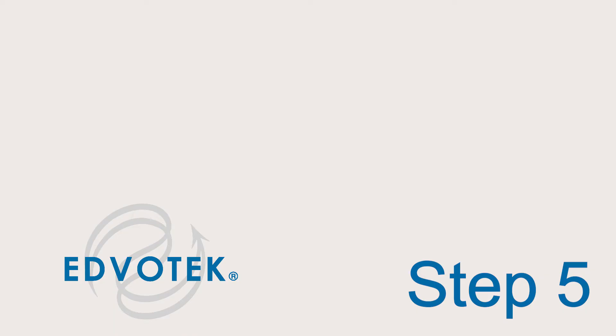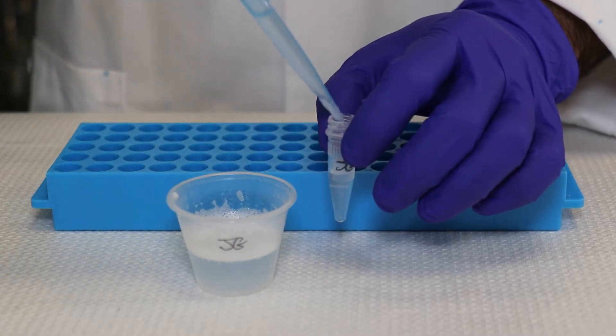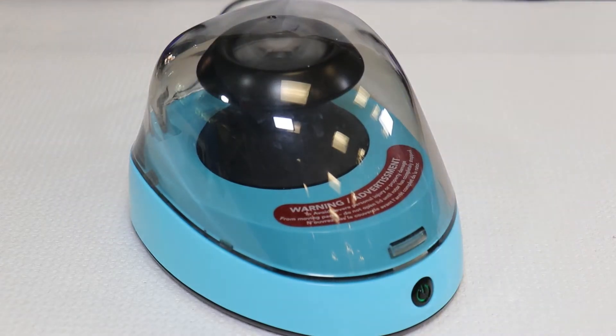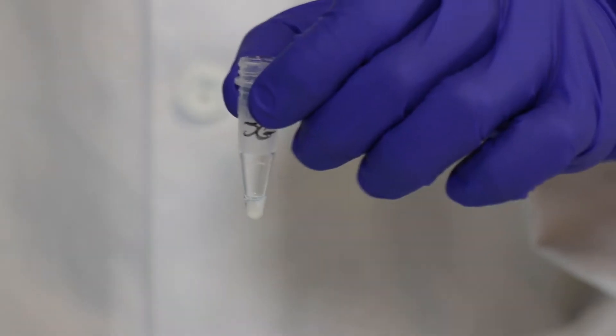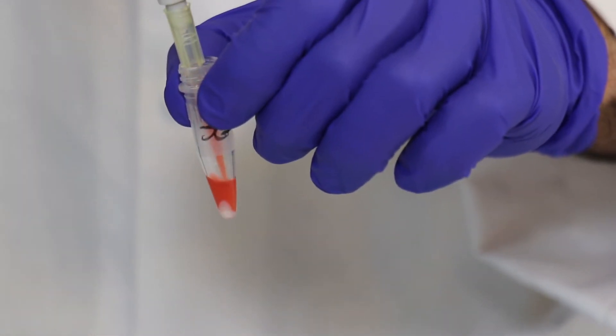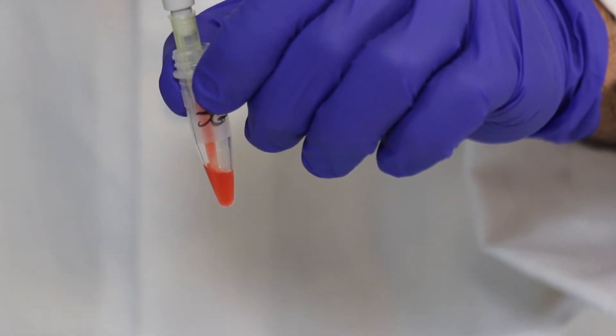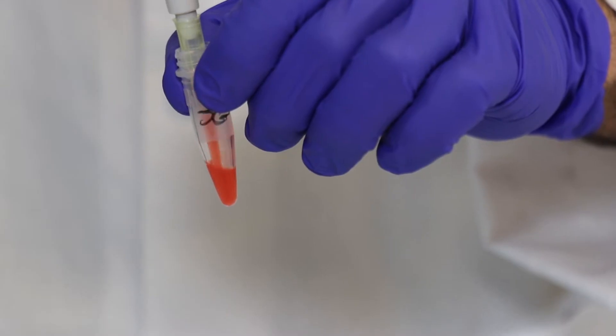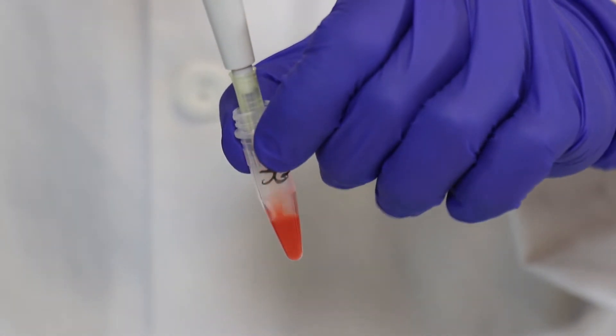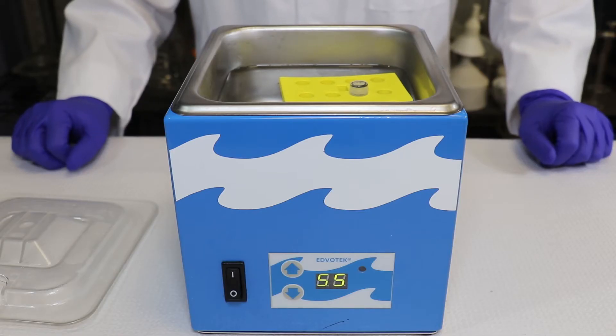Step 5: Repeat steps 3 and 4 once more. Step 6: Resuspend the cheek cell pellet in 150 microliters of lysis buffer by pipetting up and down or by vortexing.